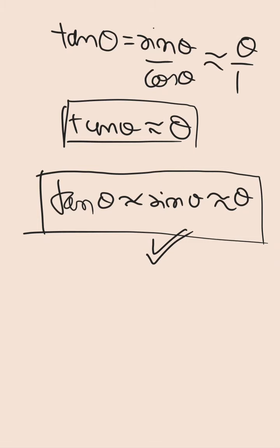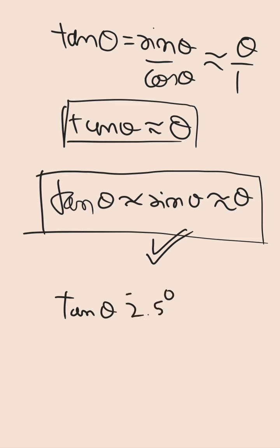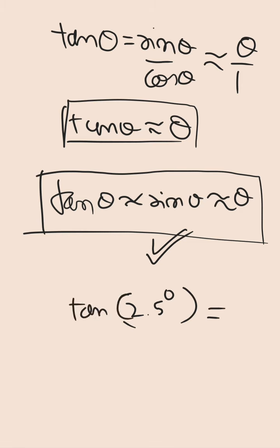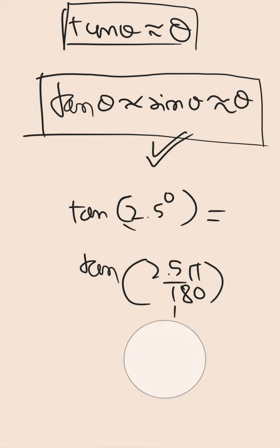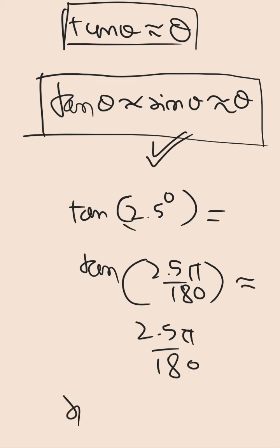For example, if we are asked the value of tan(2.5°), we first convert it into radians. tan(2.5°) = tan(2.5π/180 radians). Applying the small angle approximation, this is nearly equal to 2.5π/180. And even for sin(2.5°), the same value comes, because sin theta ≈ theta for small values. So sin(2.5°) ≈ 2.5π/180 as well.